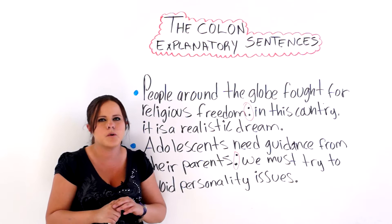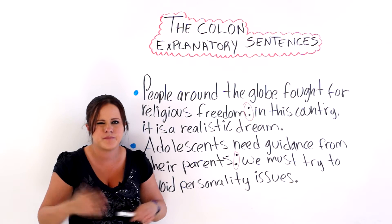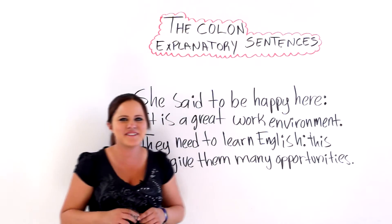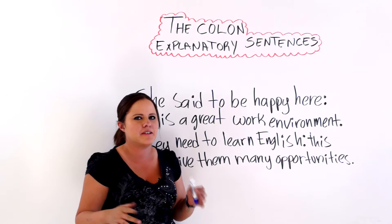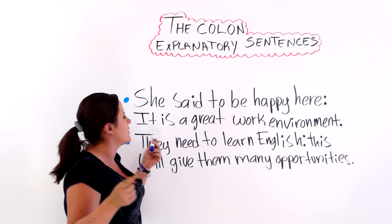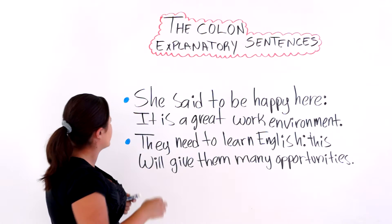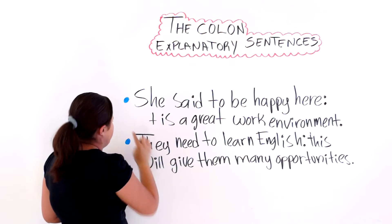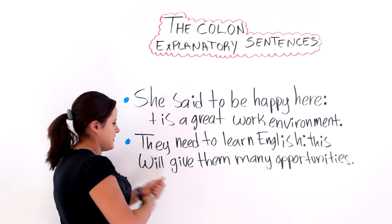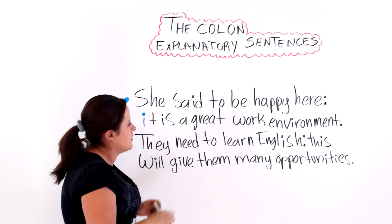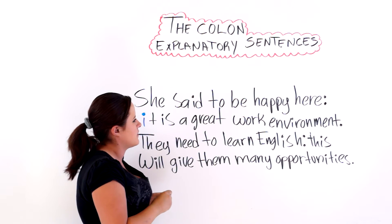Next I will give you some more practice sentences and examples so that you can practice with me. The first one says: she said to be happy here, and then we have a colon — it is a great work environment. Actually, the second clause shouldn't be capitalized because it is in the same sentence, so let me correct that for you. There you go. So we have another explanatory sentence here.